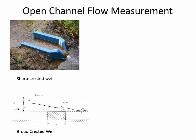Open channel flow is also really common in wastewater treatment, especially when flow starts coming into the treatment plant. One way of measuring open channel flow is with the sharp-crested weir. This picture at first looks like a flume, but it's actually a sharp-crested weir. The way you measure flow rate is through a known relationship between the depth of water upstream of this V-notch weir and the flow rate going through it, which needs to be calibrated before use.